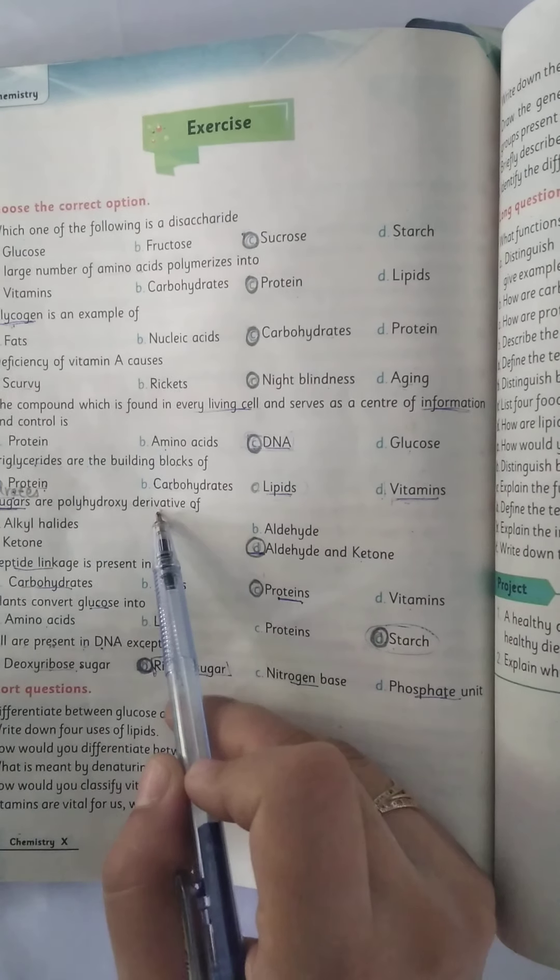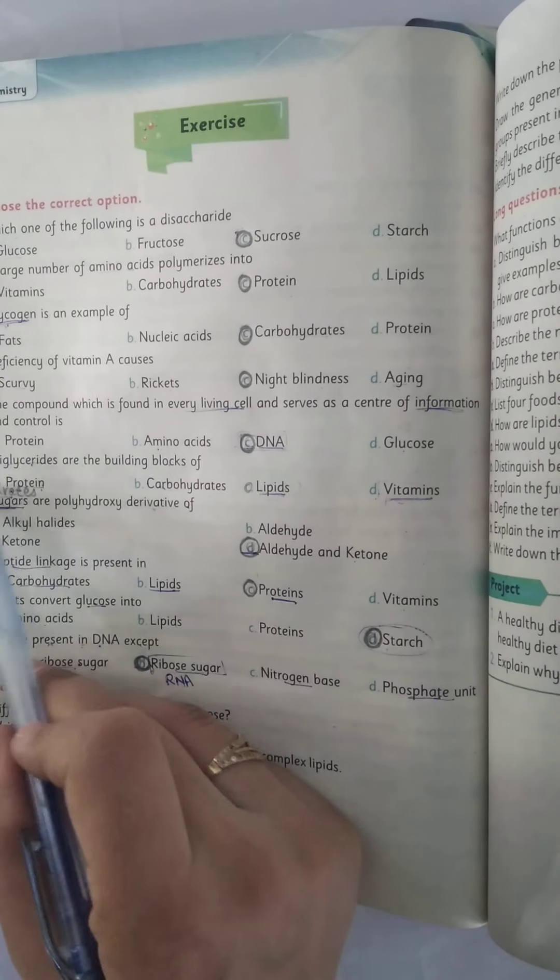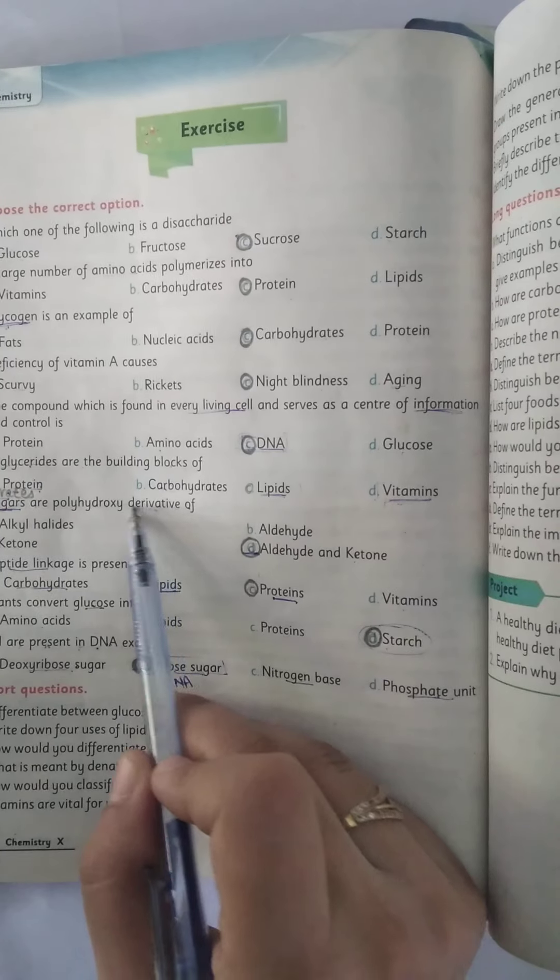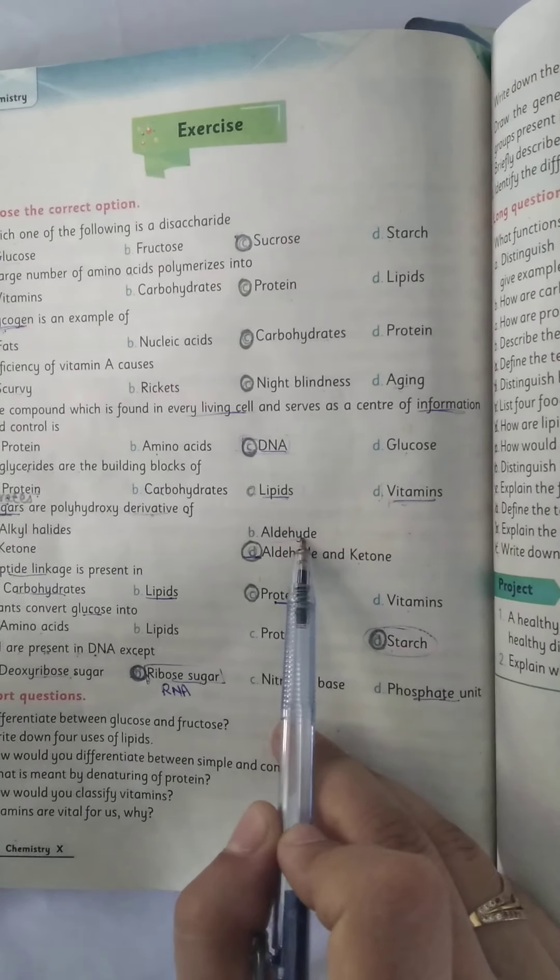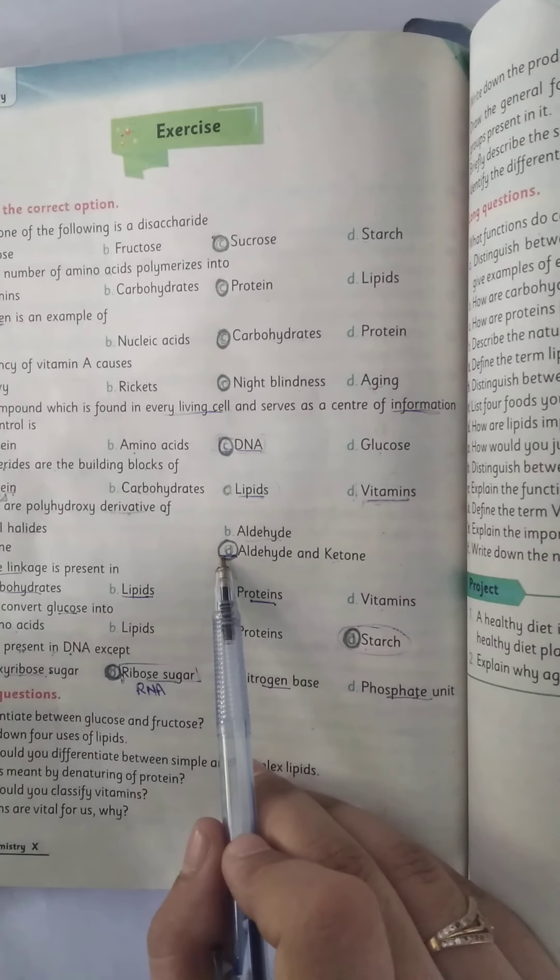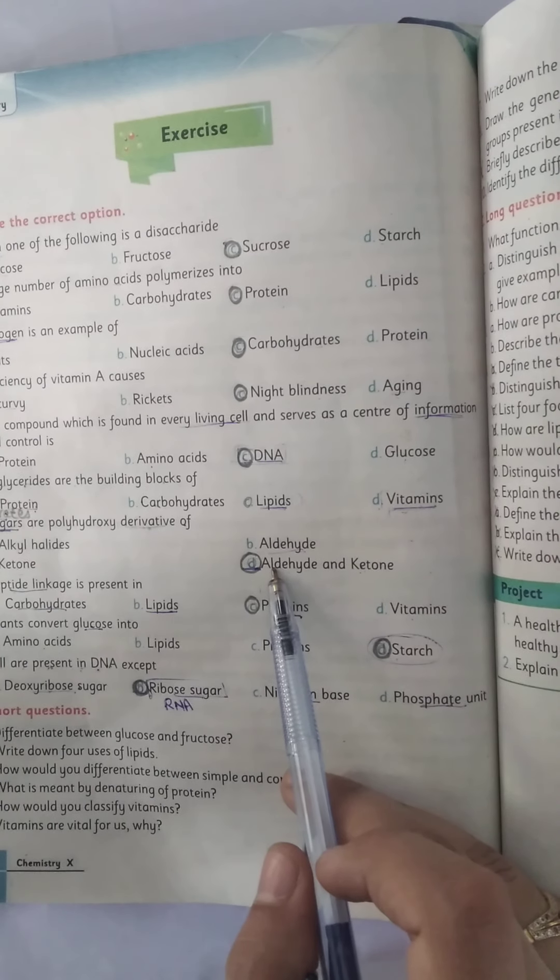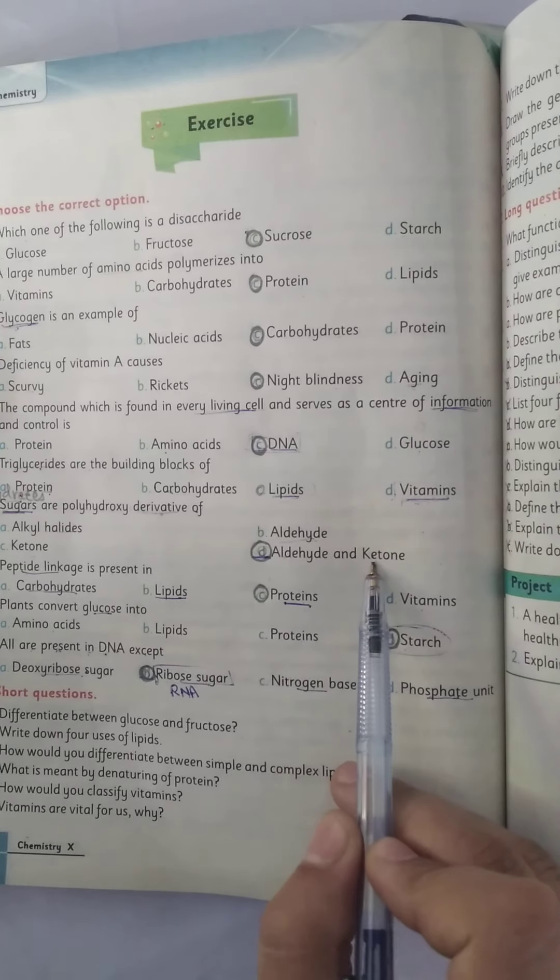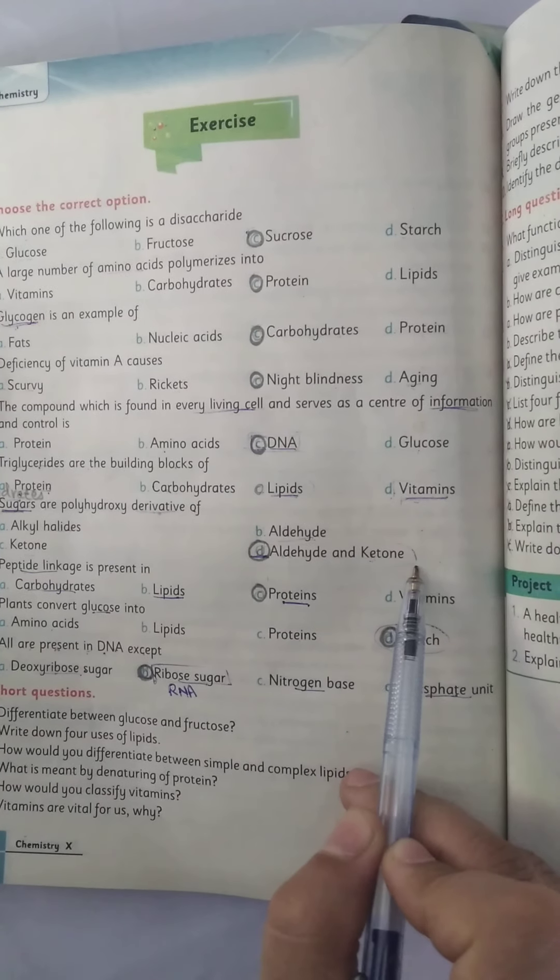Sugars are polyhydroxy derivatives. Now, sugars are carbohydrates. So these are derivatives of alkyl halides, aldehydes, ketones, aldehydes and ketones. As we know that these are polyhydroxy derivatives of aldehyde and ketones. So this one is the correct option.